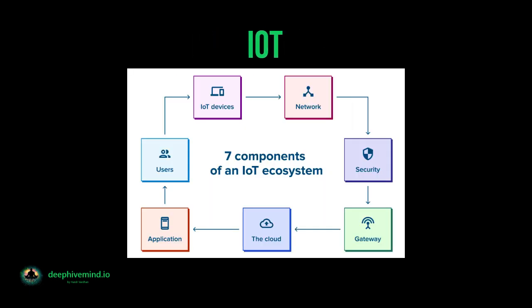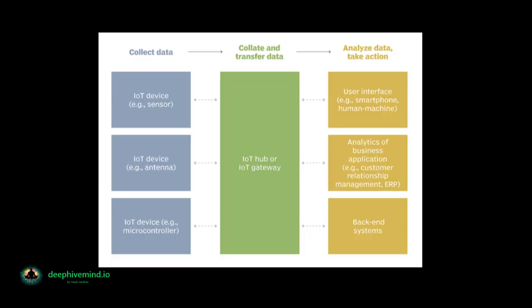An IoT ecosystem consists of web-enabled smart devices that use embedded systems such as processors, sensors, and communication hardware to collect, send, and act on data they acquire from their environments.